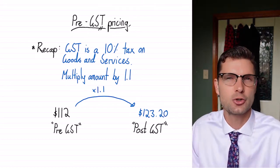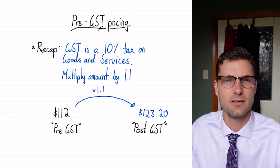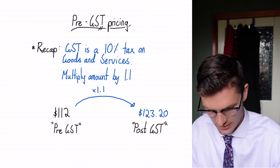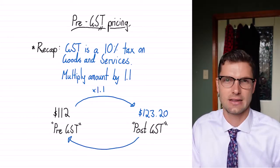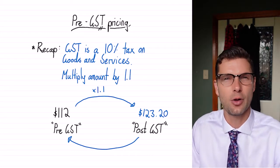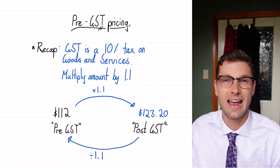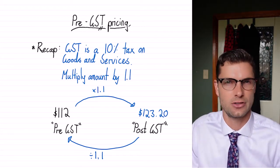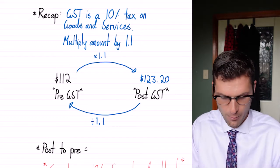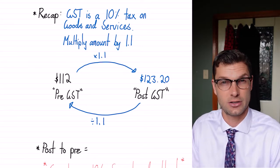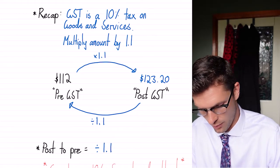So because we're trying to find the pre-GST price, all we've gotta do is the opposite of what we did in the first place. So to get from this post-GST price to the pre-GST price, instead of multiplying by 1.1, we have to divide by 1.1. And that's all the maths we've gotta do. So just write down: to go from post-GST price to pre-GST price, you just have to divide by 1.1.